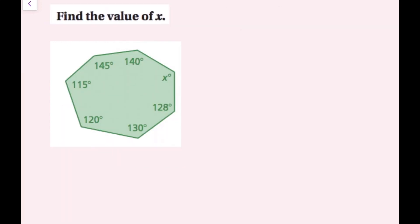In this example, we want to find the value of x. I can see that there are 1, 2, 3, 4, 5, 6, 7 angles. If this were a triangle, we'd add up all three angles and set them equal to 180. But there are seven angles and seven sides here, so I need to figure out the total amount the interior angles add up to and write an equation using that.